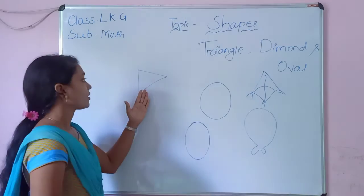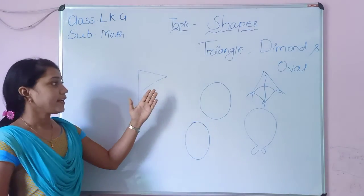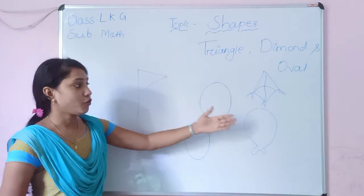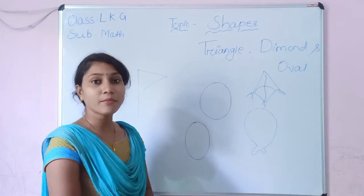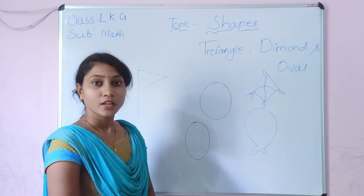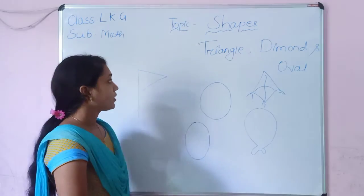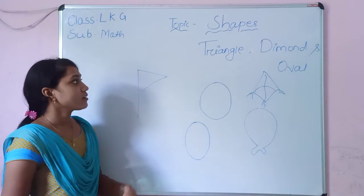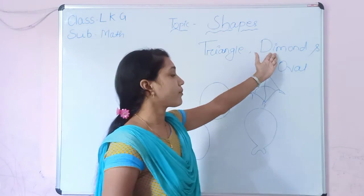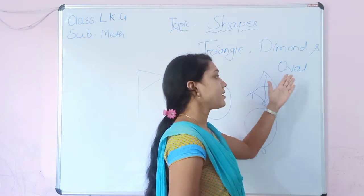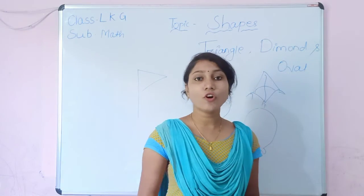Look — this triangle shape, this oval shape, and diamond shape. Shape of triangle, shape of diamond, and shape of oval.